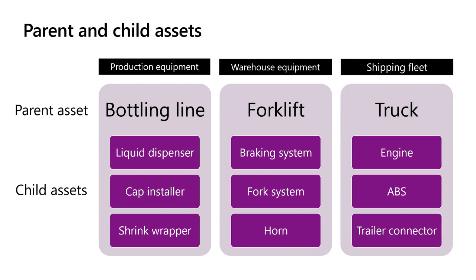In a shipping fleet, we may have our truck as the parent asset with the engine, the ABS, and the trailer connector as child assets. It's also possible to have more than just two levels of parent and child assets. What you end up with will be based on your business needs and how you need to drive your maintenance activities. The asset structure is flexible and can be maintained as you install new assets or replace assets over time.